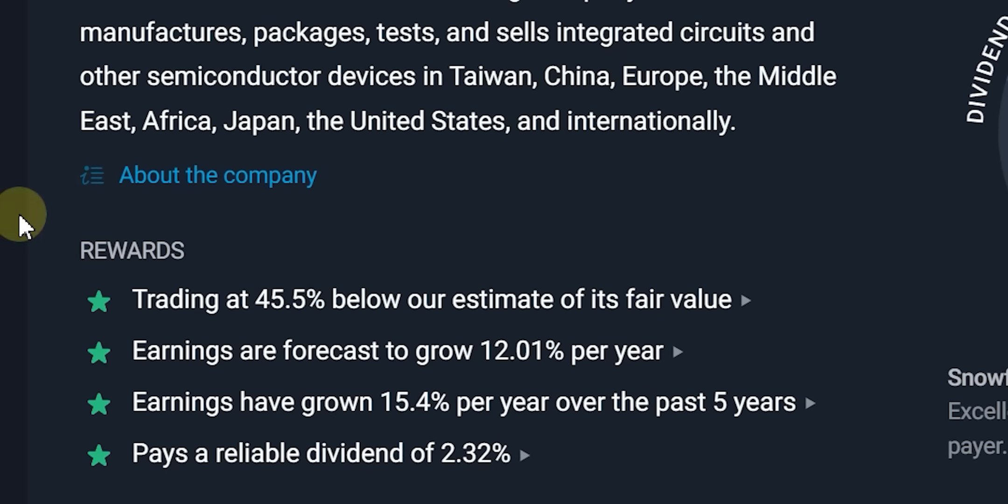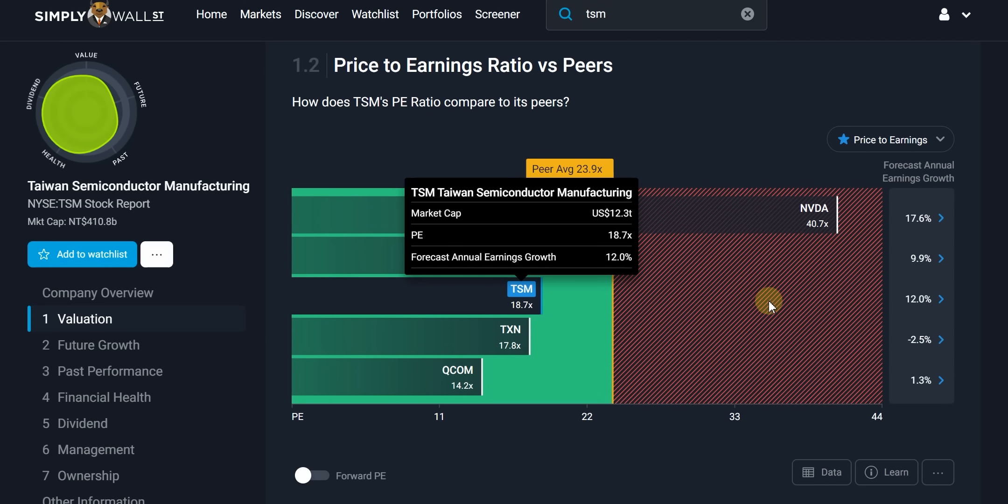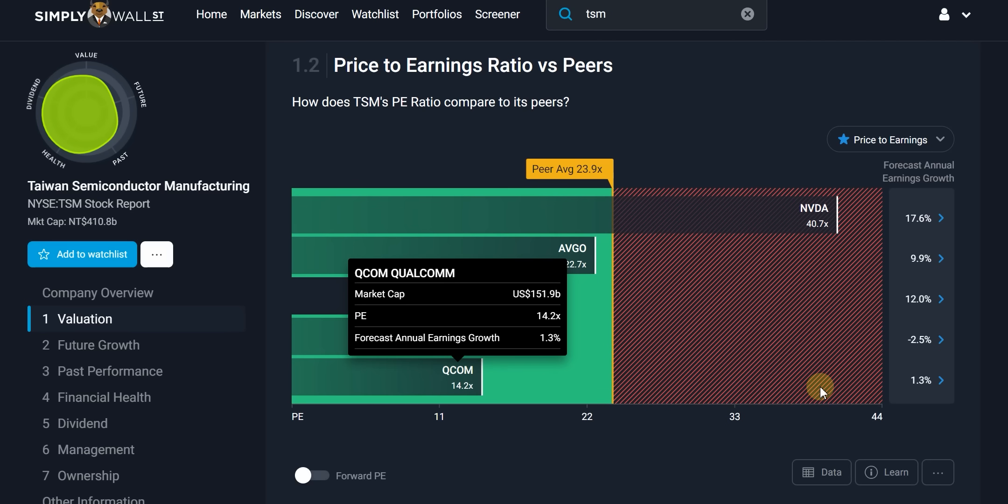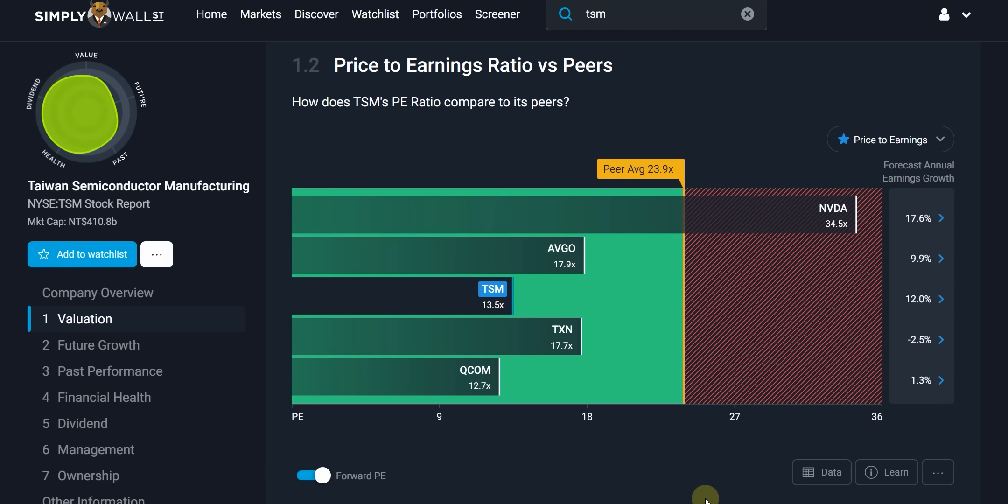Let's take a closer look at TSMC's valuation. They're priced at around 18 times earnings, compared to Nvidia's PE of 40 and Qualcomm's PE of 13. But if we look at the next 12 months of earnings, TSM trades well below most of their peers.